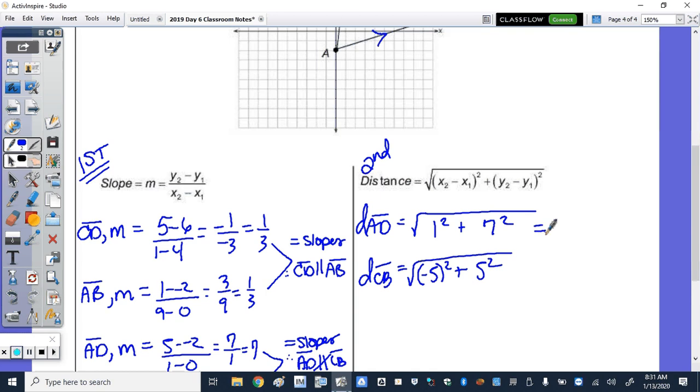Well, 1 squared 1 plus 7 squared of 49 is the square root of 50. And then 25 plus 25, because that's the square of 5 and negative 5, we also get radical 50. So equal length, I'm going to make a little note, means DA is congruent to CB.